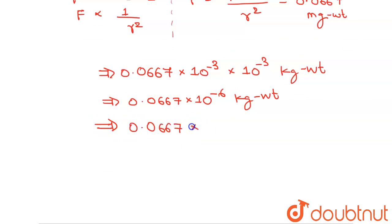0.0667 times g equals 0.0667 times 10 to the power minus 7 newton. This will give us 0.0667 times 10 to the power minus 7 newton.